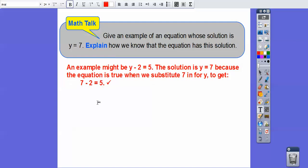But we could have chosen something like 6 times y equals 42, and 6 times 7 equals 42. Or you can do 14 divided by y equals 2, because 14 divided by 7 equals 2. There's infinitely many equations.